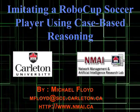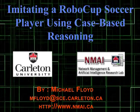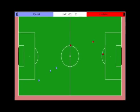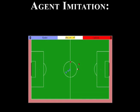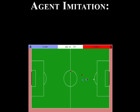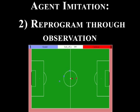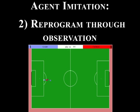Imitating a RoboCup Soccer Player Using Case-Based Reasoning. Our research examines the ability of a software agent to imitate the behavior of humans, robots, or other agents. Learning through imitation allows the transfer of knowledge from an expert without the expert performing any programming. Our goal is to have a multi-purpose robot or software agent that can be reprogrammed to perform a new task simply by observing someone else perform that task.